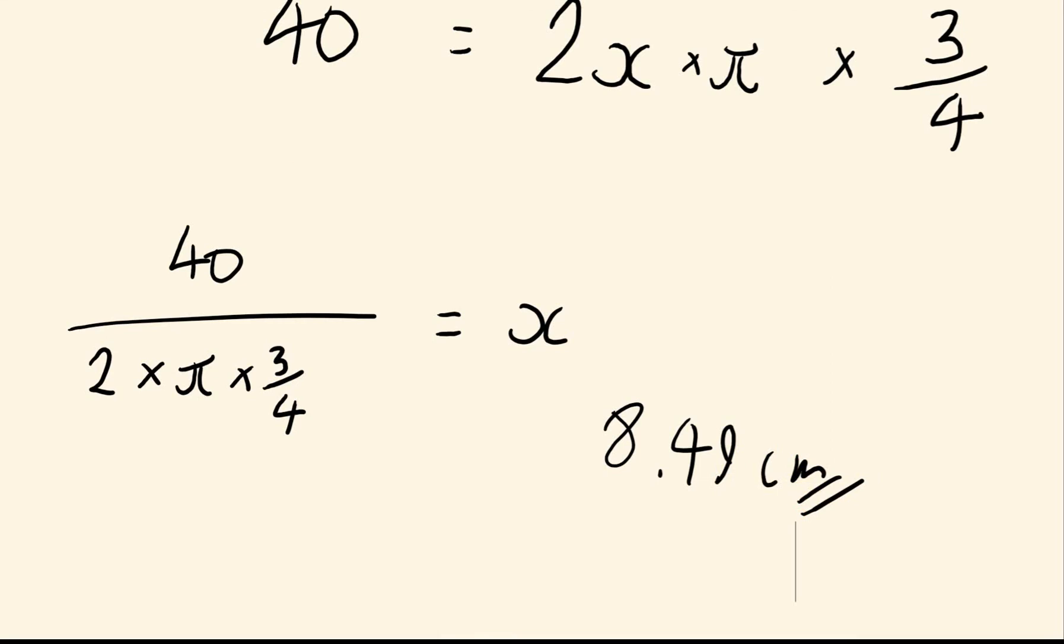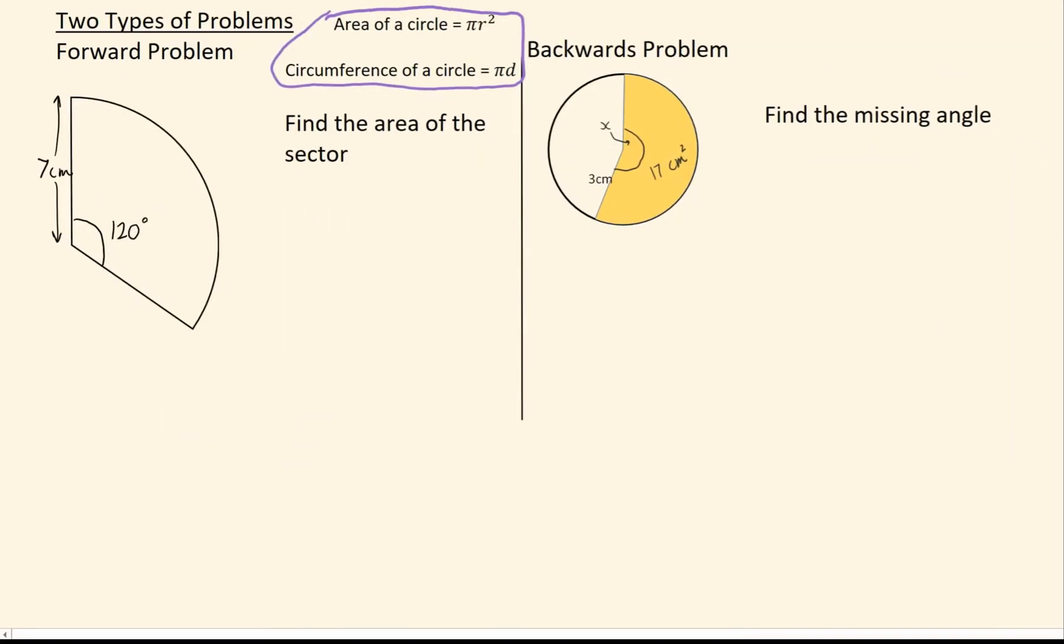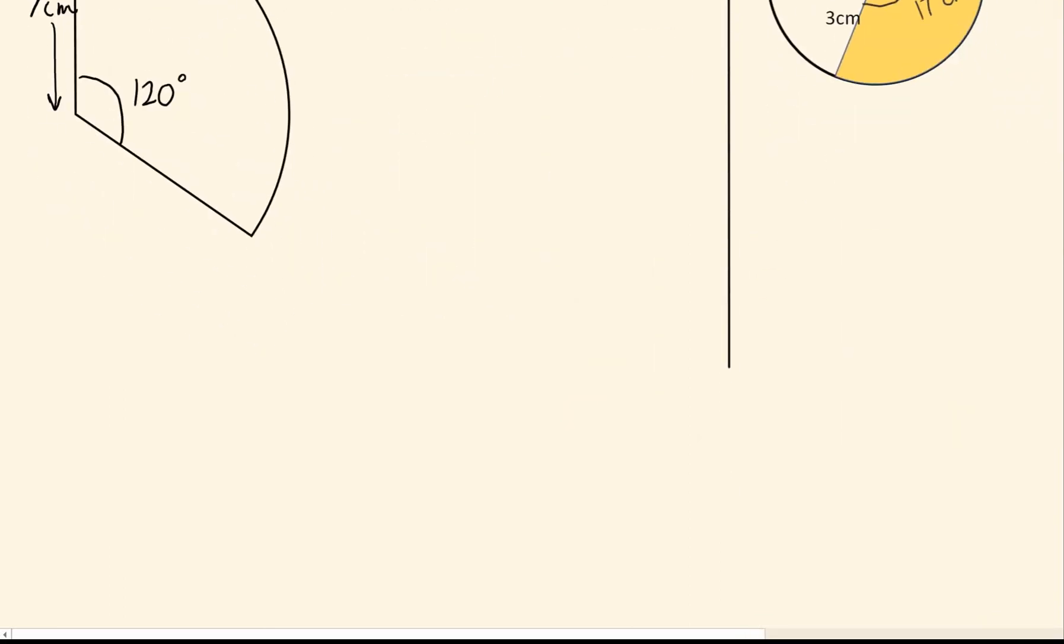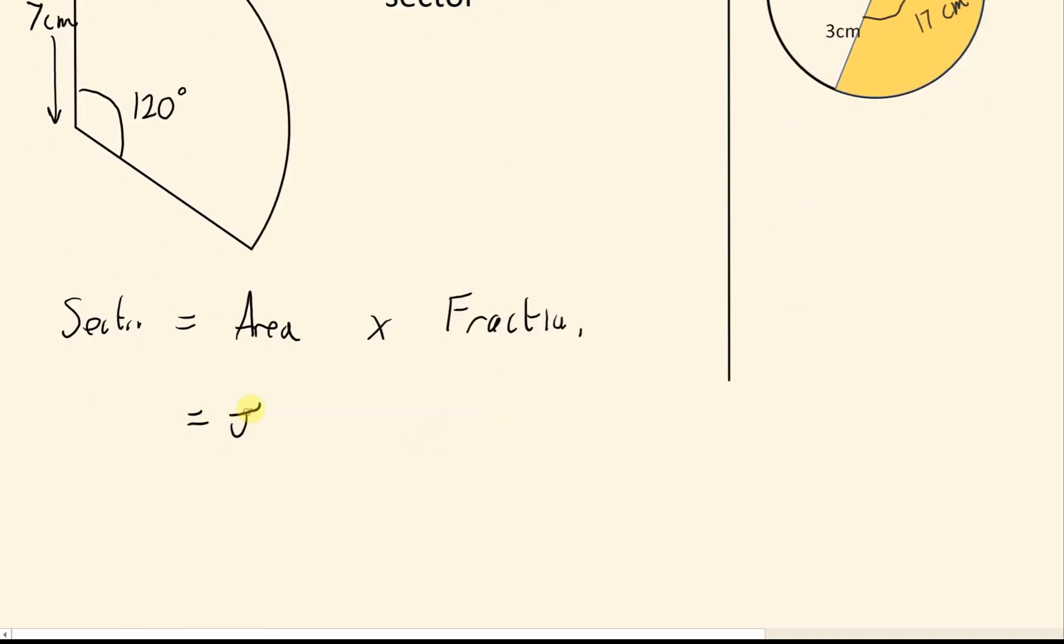Let's see another example, this time using the area of a sector. So first of all this problem: if we wanted to find this area, the sector would be the full area times by the fractional circle we have again. So the full area we can work out by using pi r squared, so pi times 7 squared.